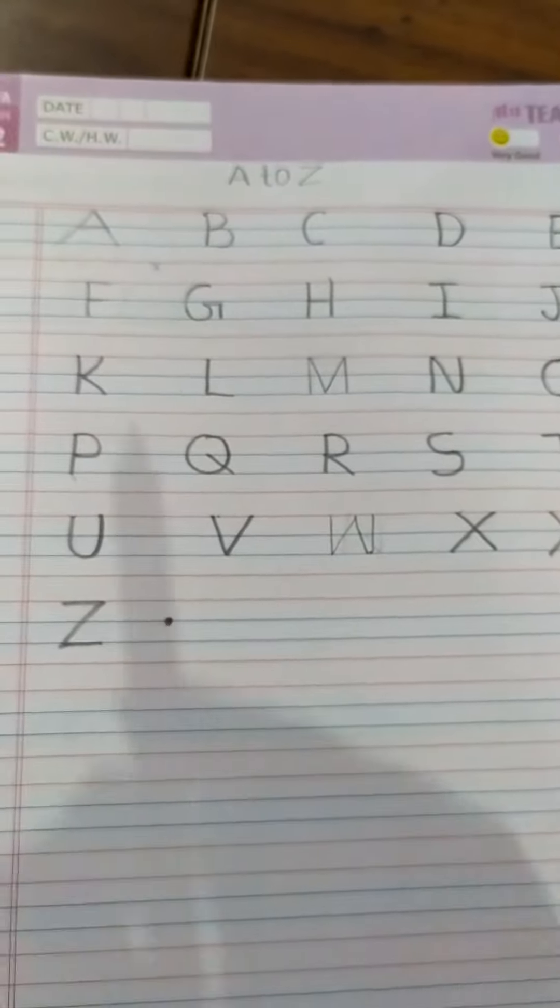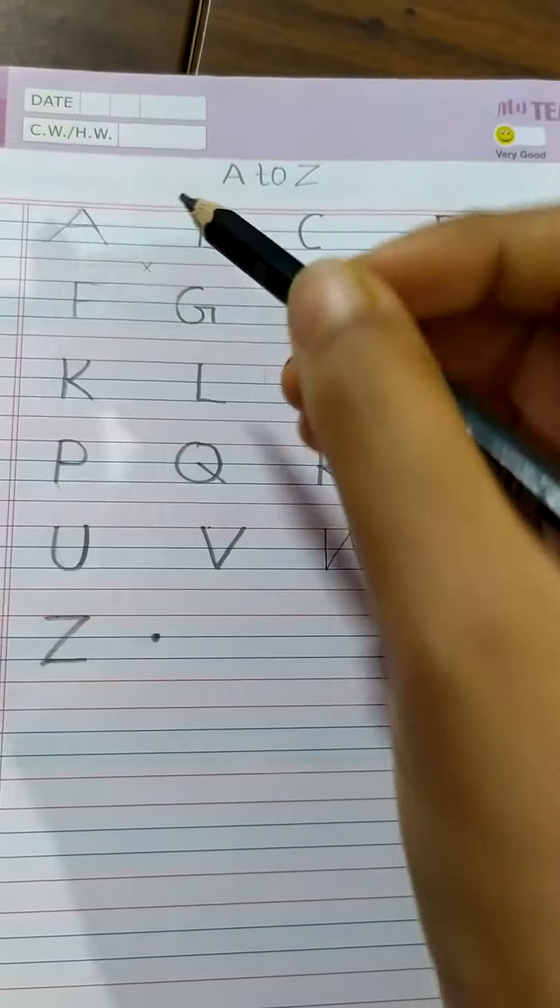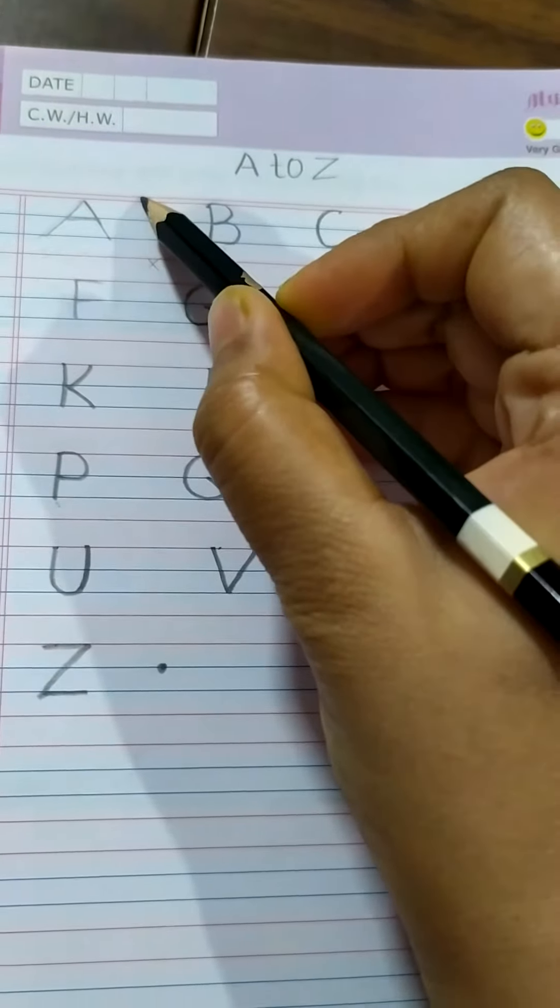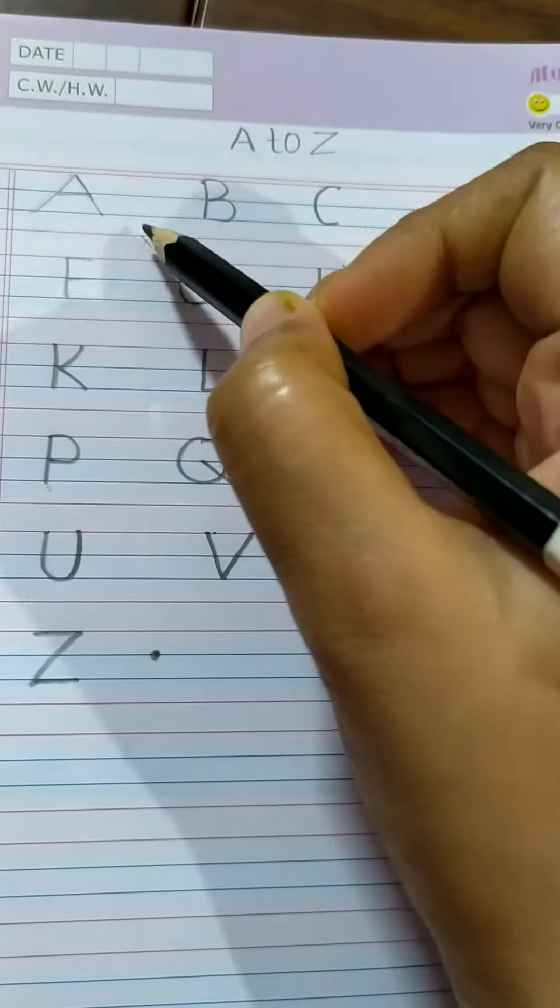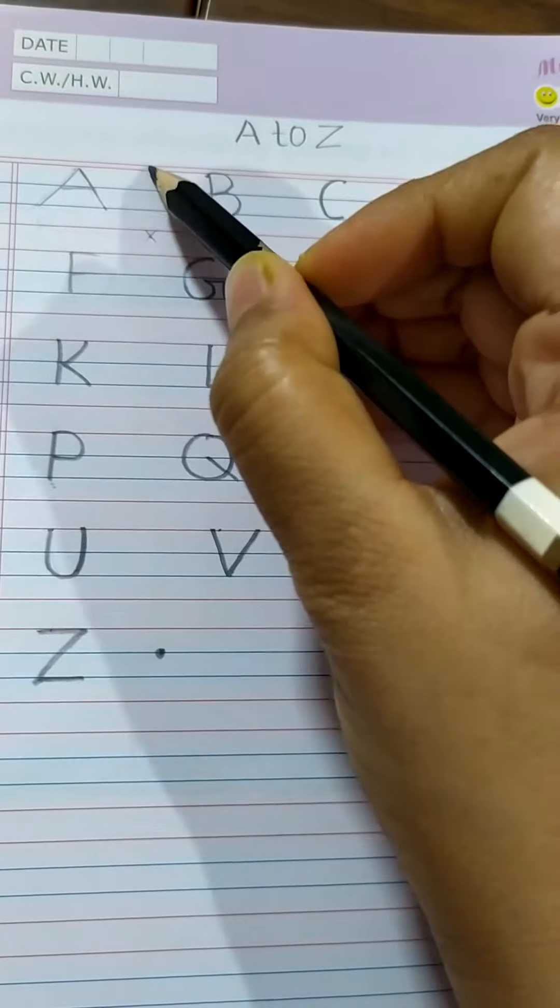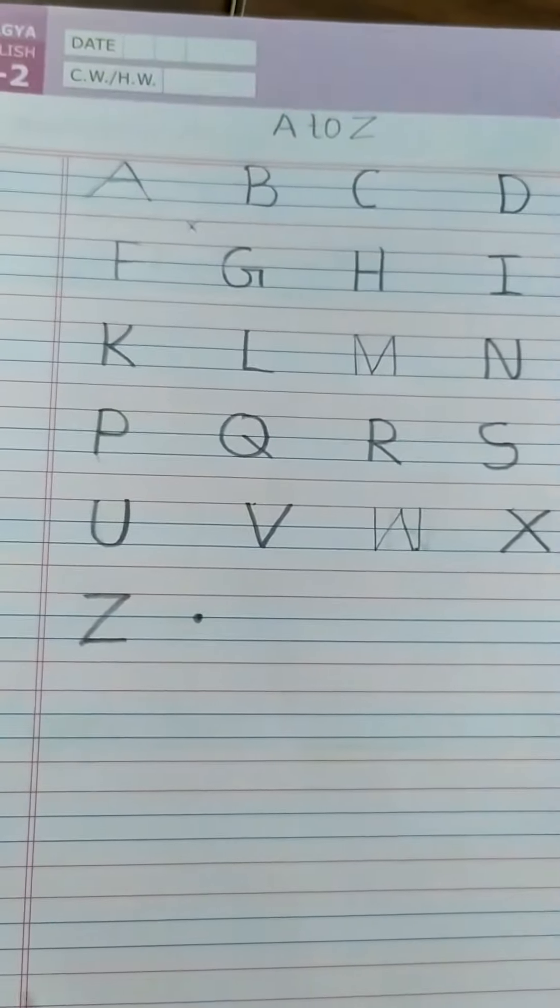Hello children, today we are going to learn how to write A to Z in four line notebook. See here, we have a red line, blue line, blue line and red line. This we call a four line notebook.